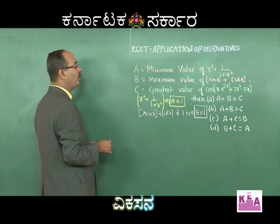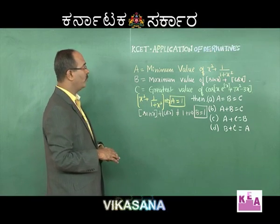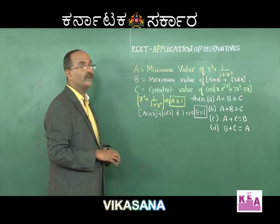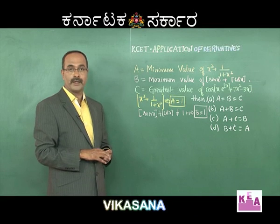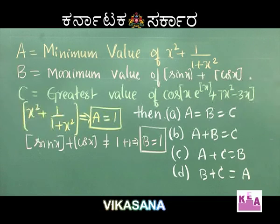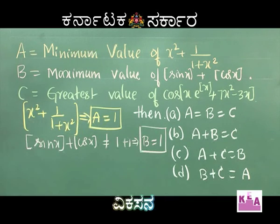So we got A = 1 and B = 1. So we should expect C = 1 as well — but we have to verify what the value of C is.